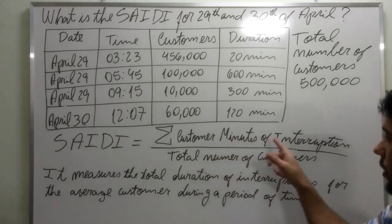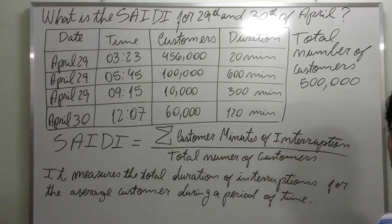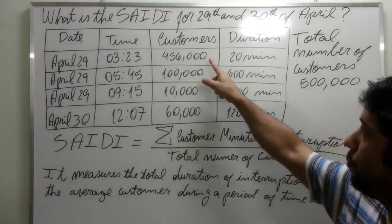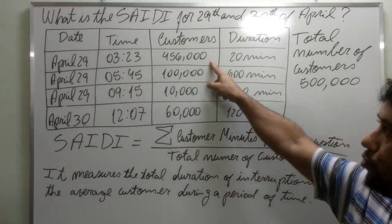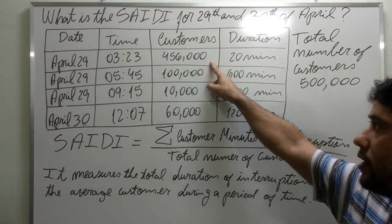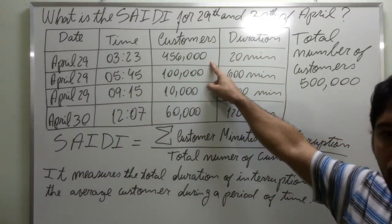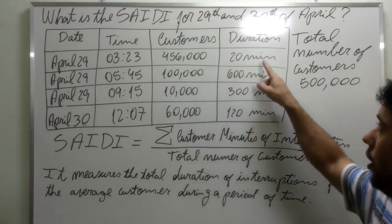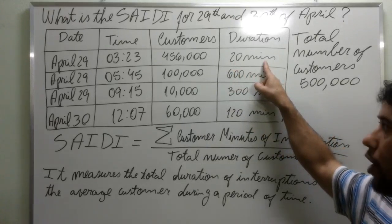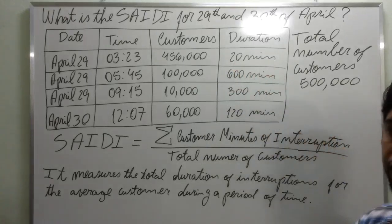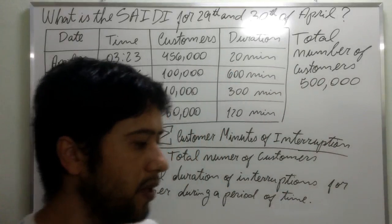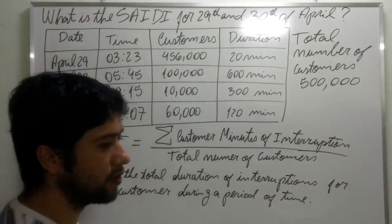What is customer minutes of interruption? Customer minutes of interruption is the product between the number of customers interrupted by that outage and the duration of the interruption. For example, let's begin with the exercise.